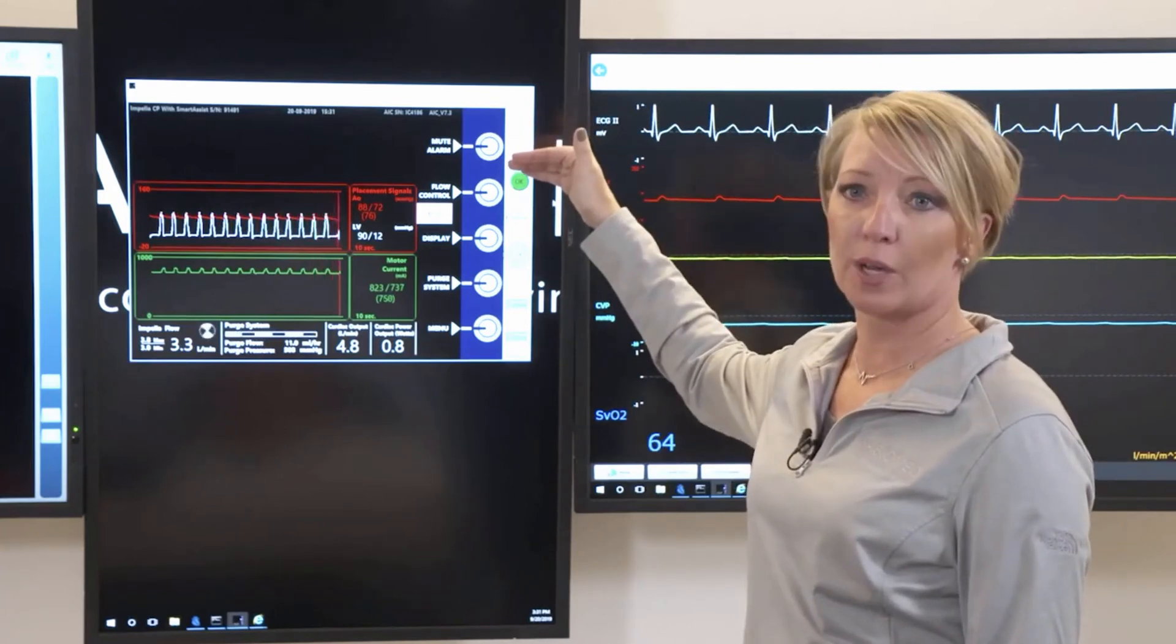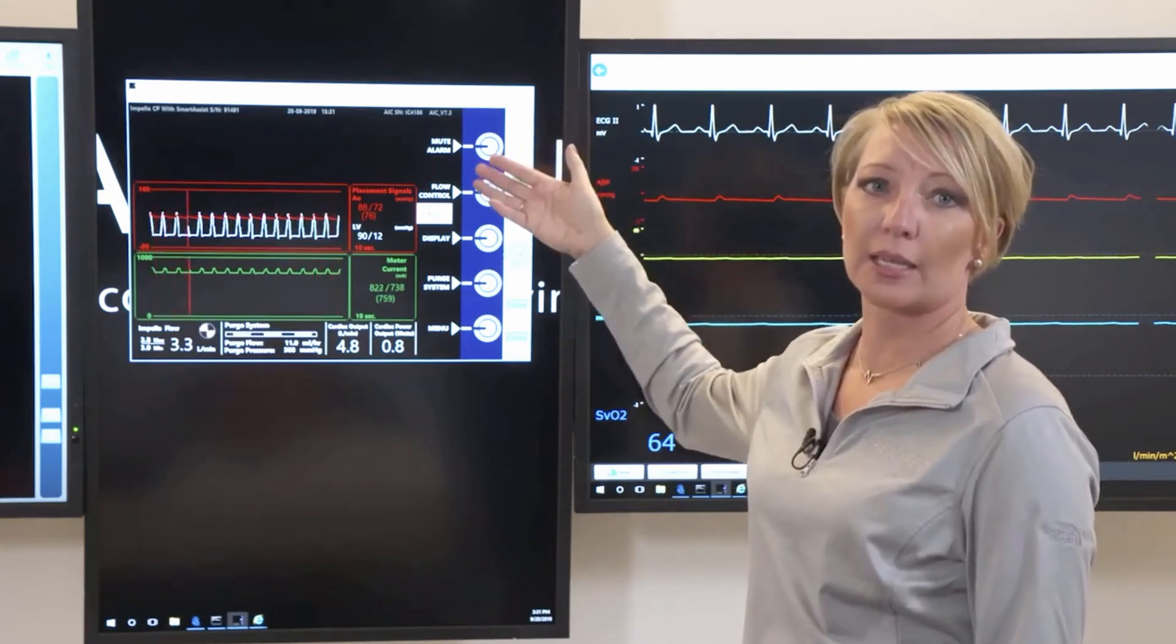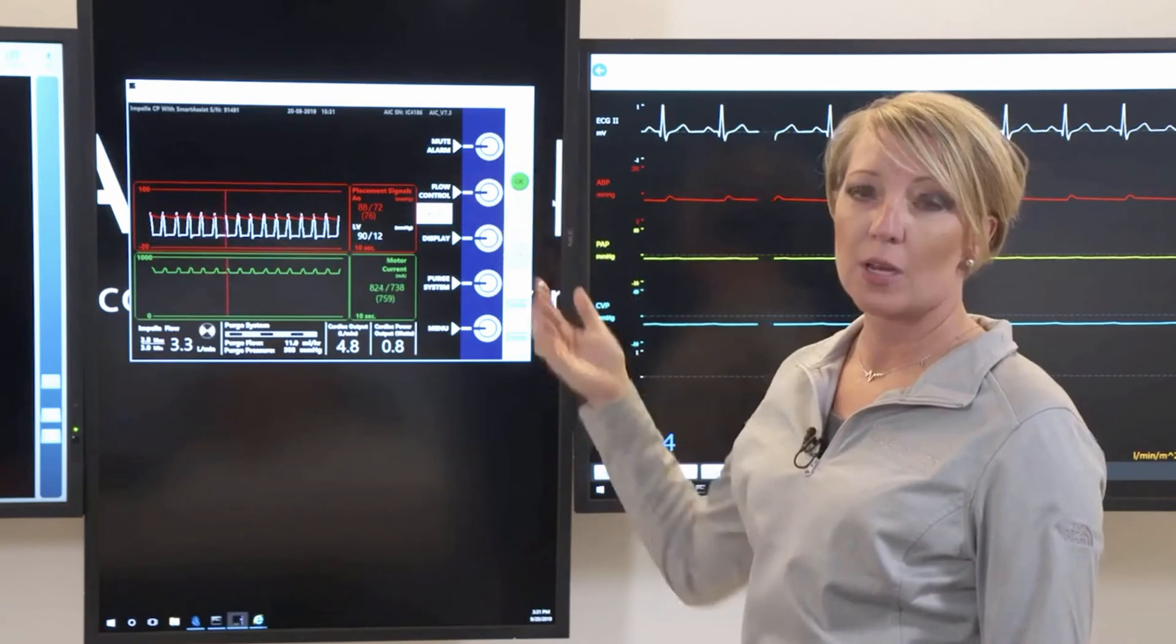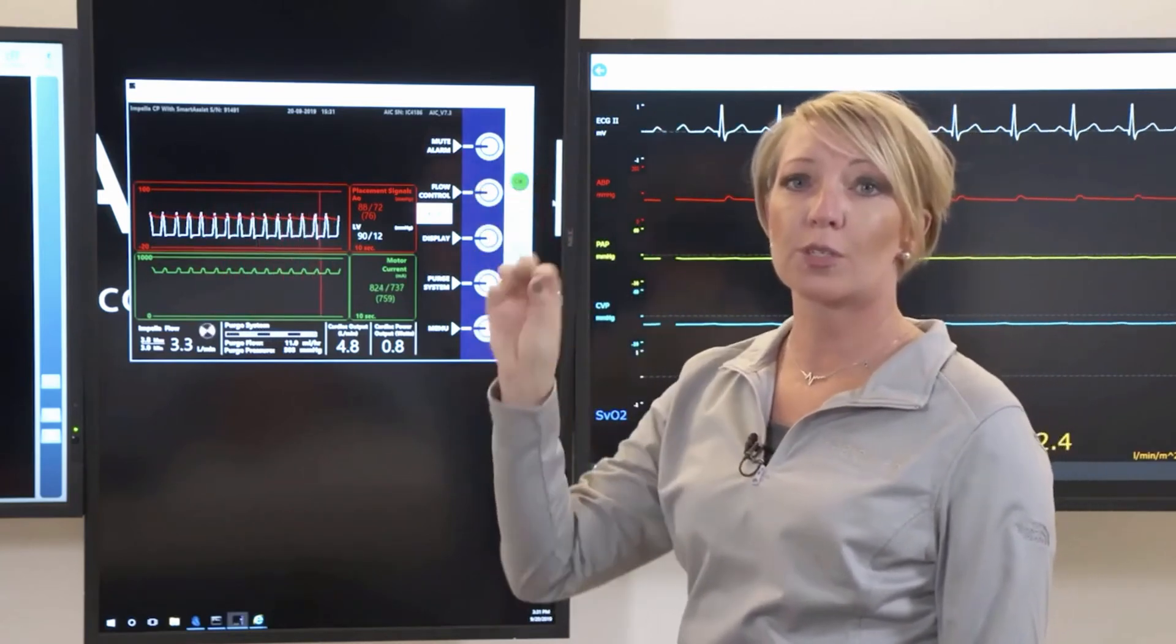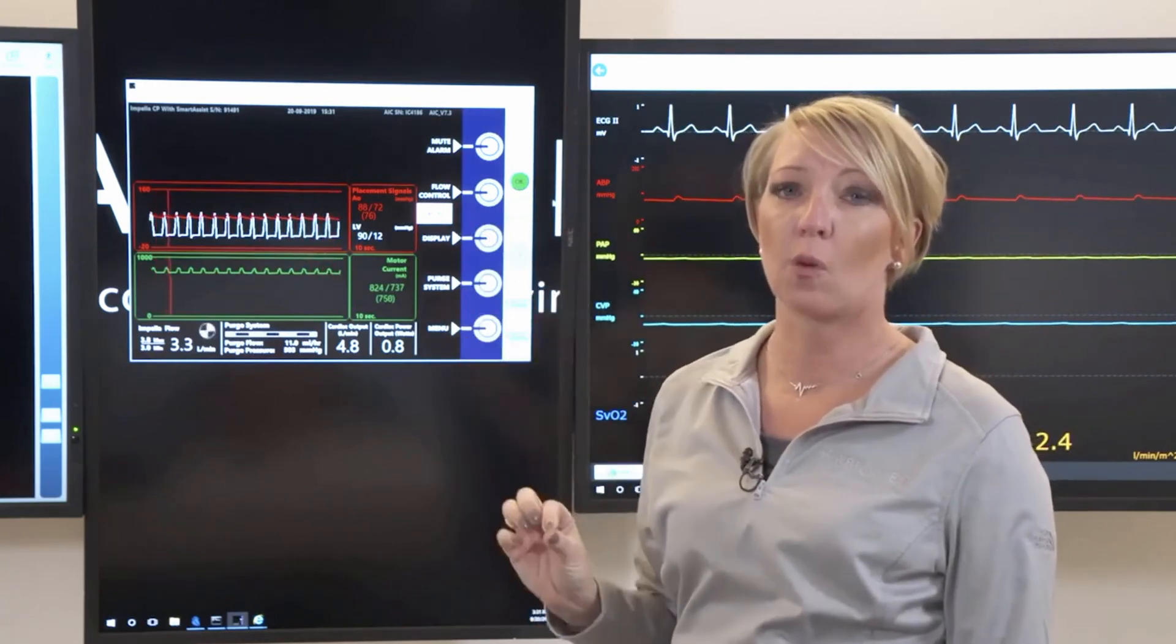The first button is our mute alarm button. This is going to silence any alarms that you may have. It is important to understand that there are three different colors of alarms, in order of importance: red, yellow, and white.